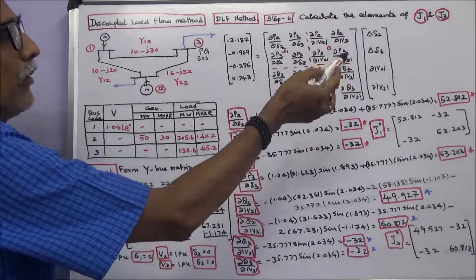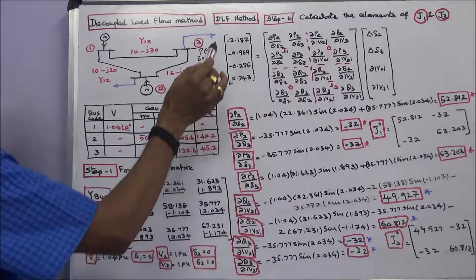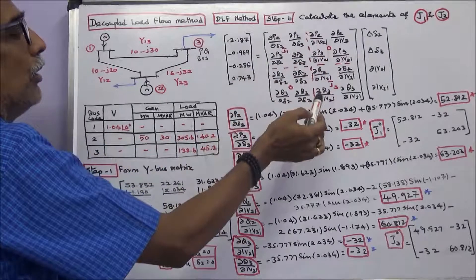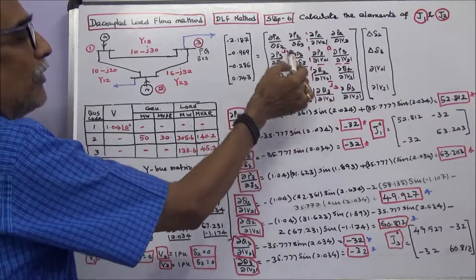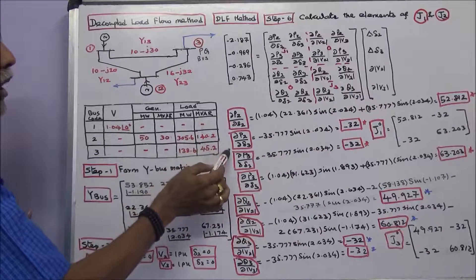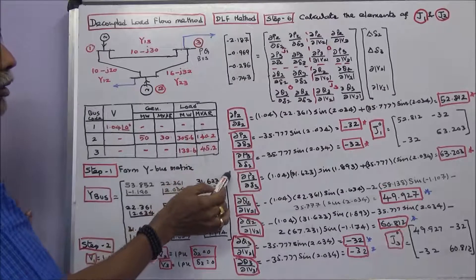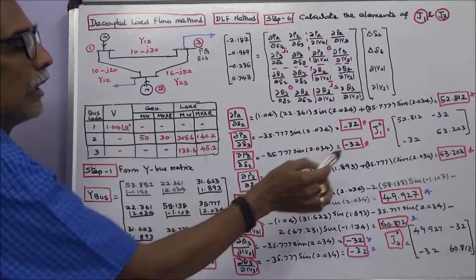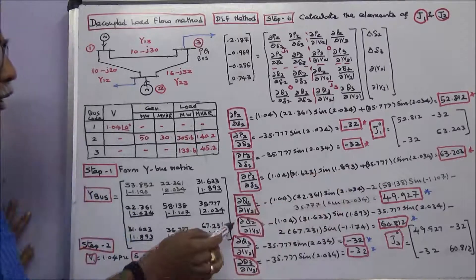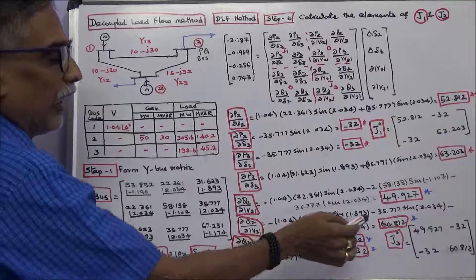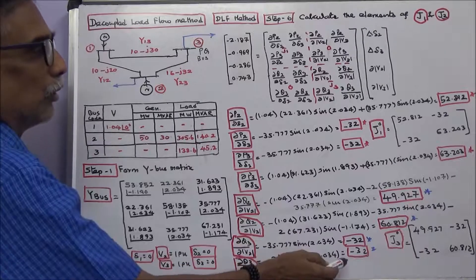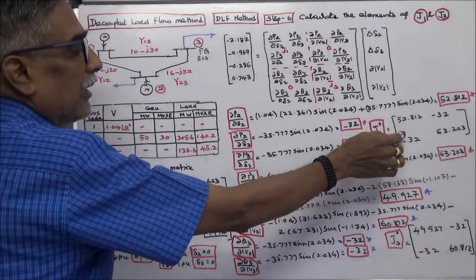Step 6: Calculate the elements of J1 and J3. The J1 matrix contains delta P2 and delta P3 terms; J2 and J4 matrices are zero. The elements are: dP2/d(delta2) = 52.812, dP2/d(delta3) = -32, dP3/d(delta2) = -32, dP3/d(delta3) = 63.293. For J3: dQ2/d|V2| = 49.927, dQ2/d|V3| = 60.812, dQ3/d|V2| = -32, dQ3/d|V3| = -32. These form the J1 and J3 matrices.